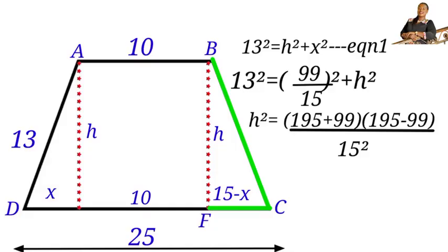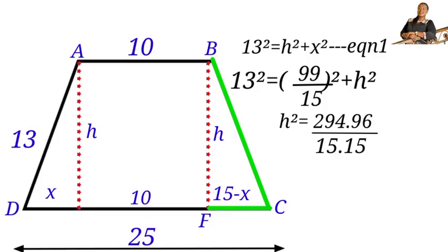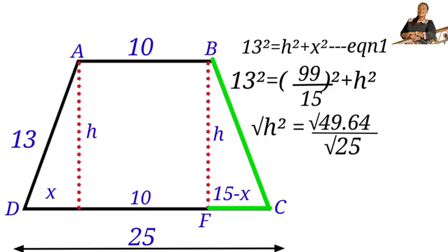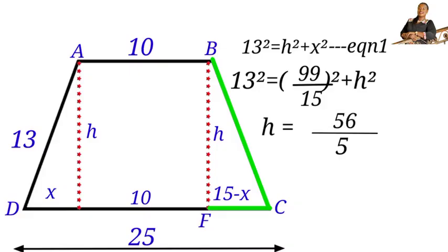So h² = (294 × 96) / (15 × 15). Simplifying by dividing: 294/3 = 98, and 96/3 = 32, giving h² = (98 × 32) / 25. Writing 98 as 49 × 2: h² = (49 × 2 × 32) / 25 = (49 × 64) / 25. Taking the square root of both sides: h = (7 × 8) / 5 = 56/5.